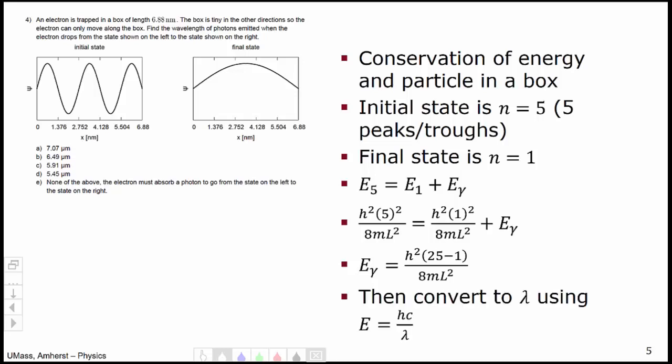Then we just need to convert to wavelength using this relation hc over lambda, which comes from e equals hf for a photon and c equals lambda f. The result will be B.